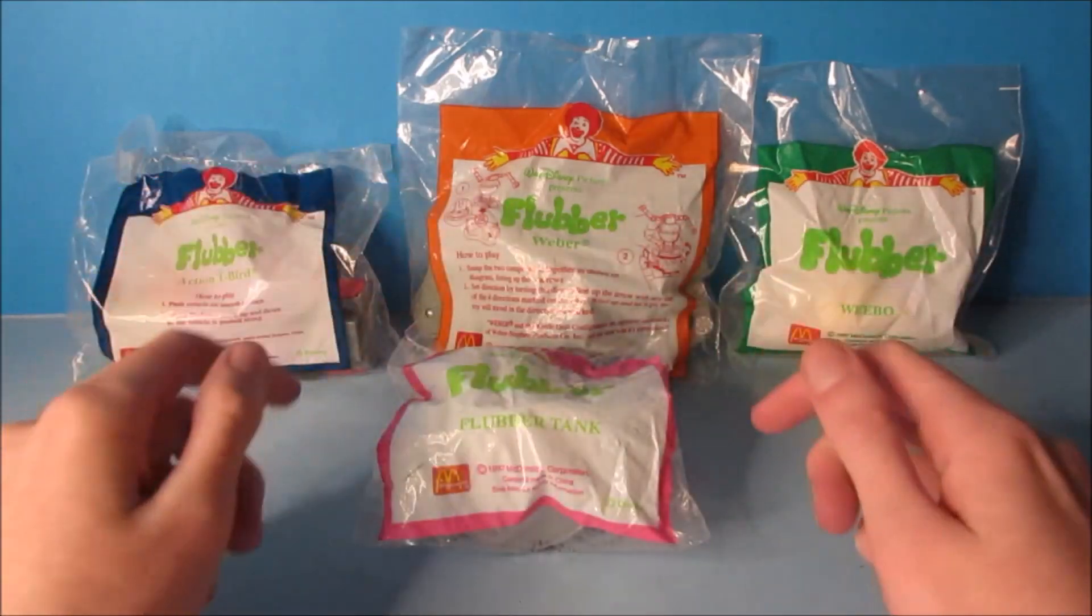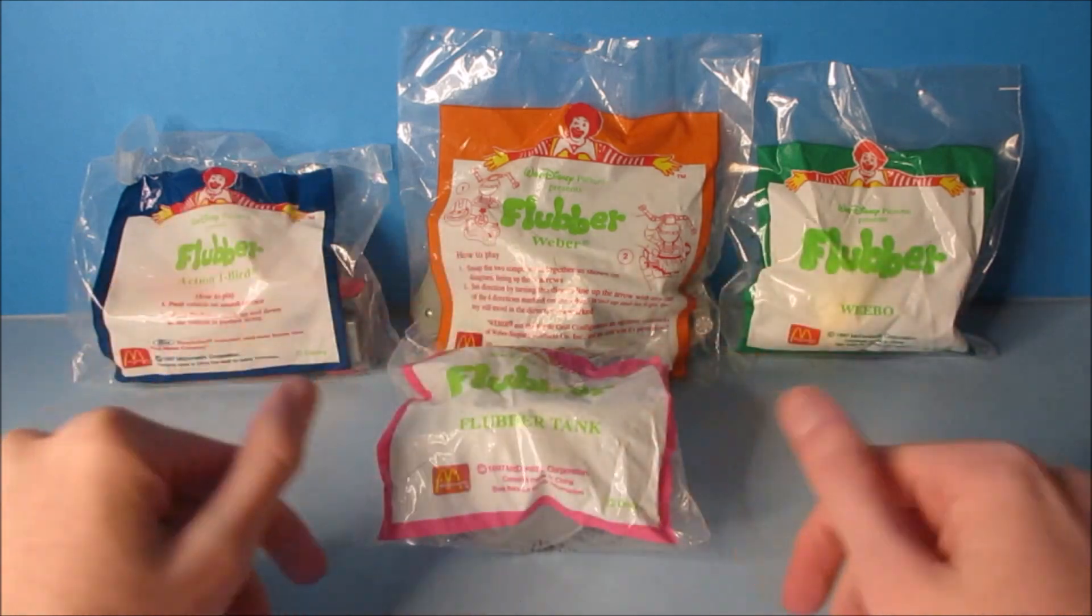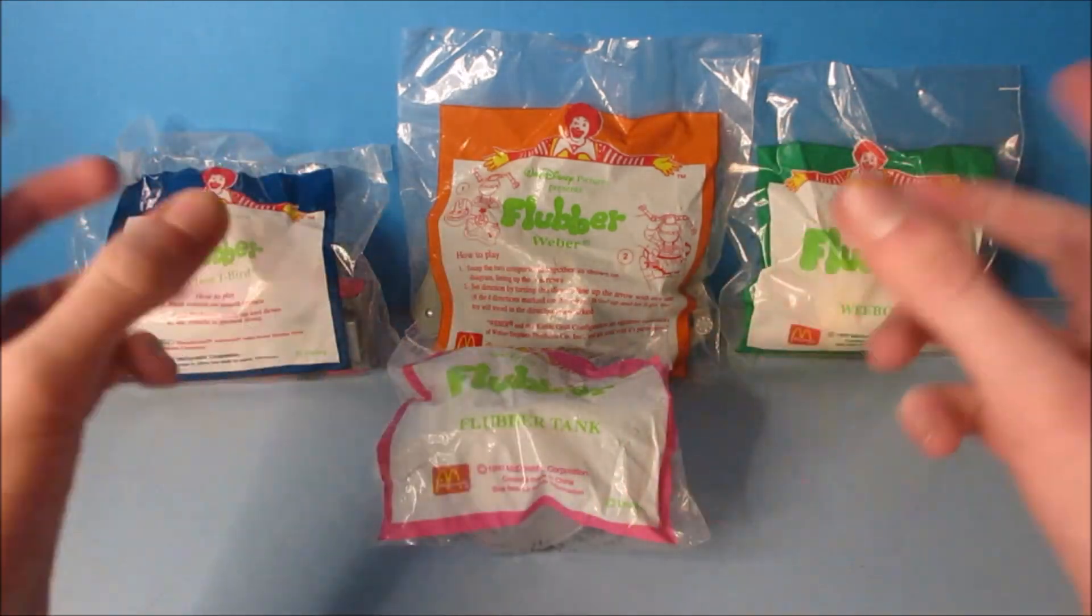What's going on everyone? Today we have Walt Disney's Flubber set of four cool-looking movie toys released by McDonald's back in 1997. Let's open it up and have a little fun.